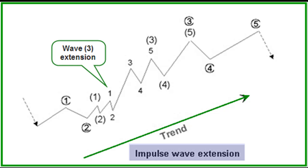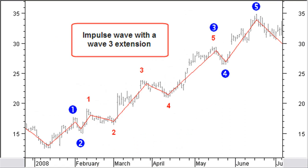In most cases, extensions happen with wave 3, and waves 1 and 5 then incline toward equality. Here you can see an example of an upward impulse wave on a daily chart with an extension impulse wave of a lower degree in wave 3.